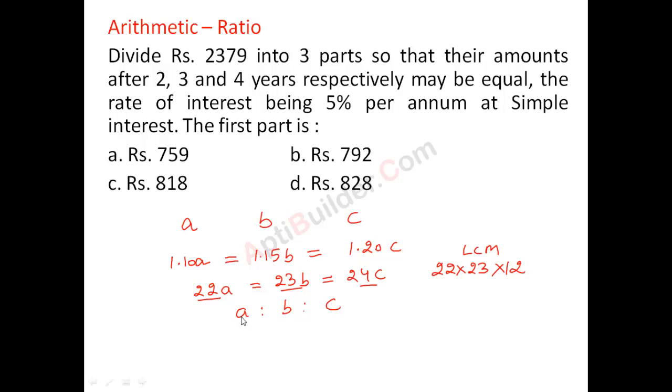So ratio will be LCM divided by 22. Here it is 23 into 12. The ratio will be LCM divided by the coefficients. Coefficient of A, Coefficient of B and Coefficient of C.